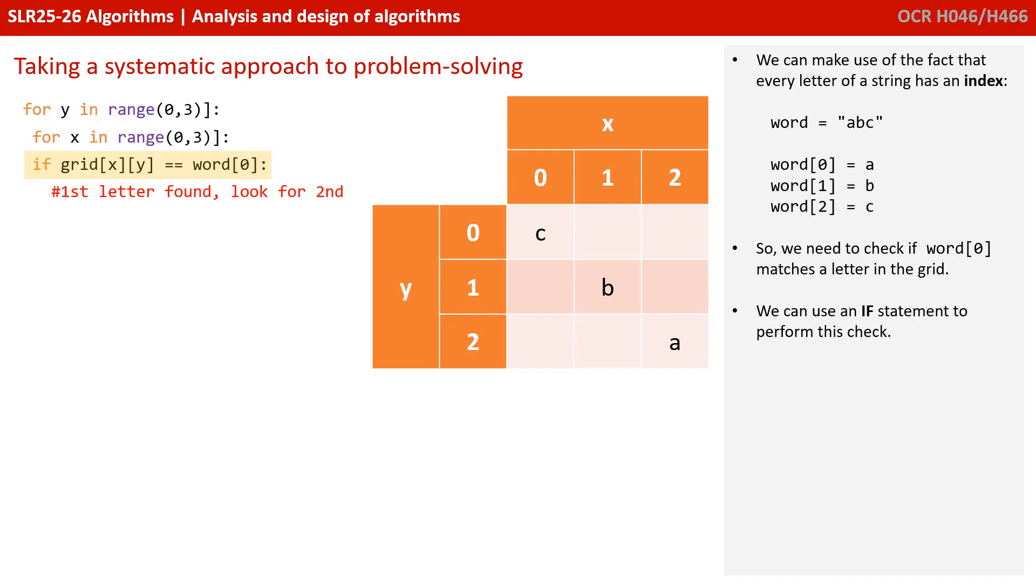So now that we can visit every letter in the grid, we need to think about whether that letter is going to match the first letter of our word. Here we can make use of the fact that a string has an index for every letter. So, word 0 in our example would be A, word 1 would be B, word 2 would be C. So we're looking for word 0 matching the letter in the grid, and we can achieve this with a simple if statement. If grid XY equals word 0, then we find a letter in the grid that matches the first letter of the word that we're looking for.